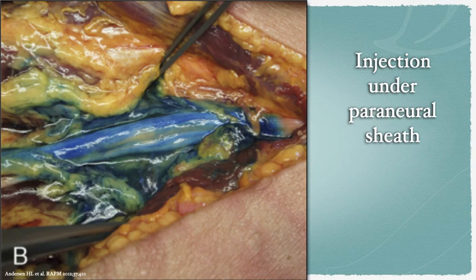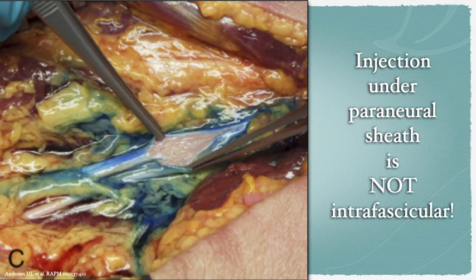Injection under or within the perineural sheath is not an intrafascicular injection and is beneficial to a successful popliteal sciatic nerve block.